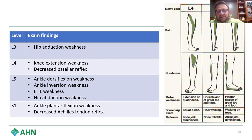The big things to remember here are that L5 will give you a foot drop, and S1 will classically give you plantar flexion weakness.